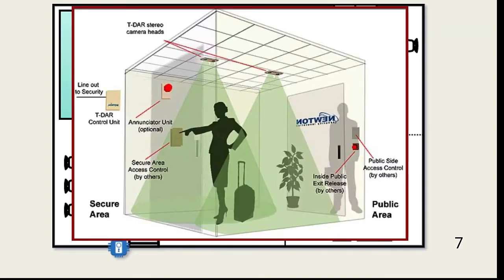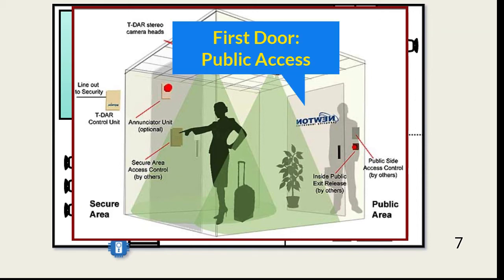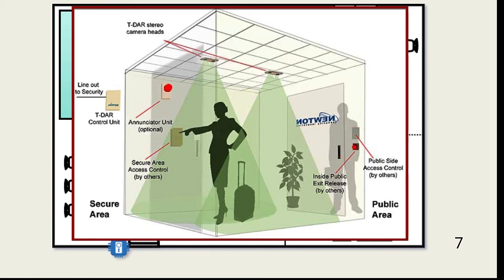This is an example of a man trap. A single person enters the first door into a controlled area. Access through the first door might be controlled by a human guard or a lock. The first door closes, and then the person proceeds to provide identification to a guard, provides a code or a biometric scan, or both, to enter the security zone. In our example, cameras help ensure only one person at a time enters the man trap. Other solutions include a scale as the floor of the trap to detect weight greater than expected for a single person.